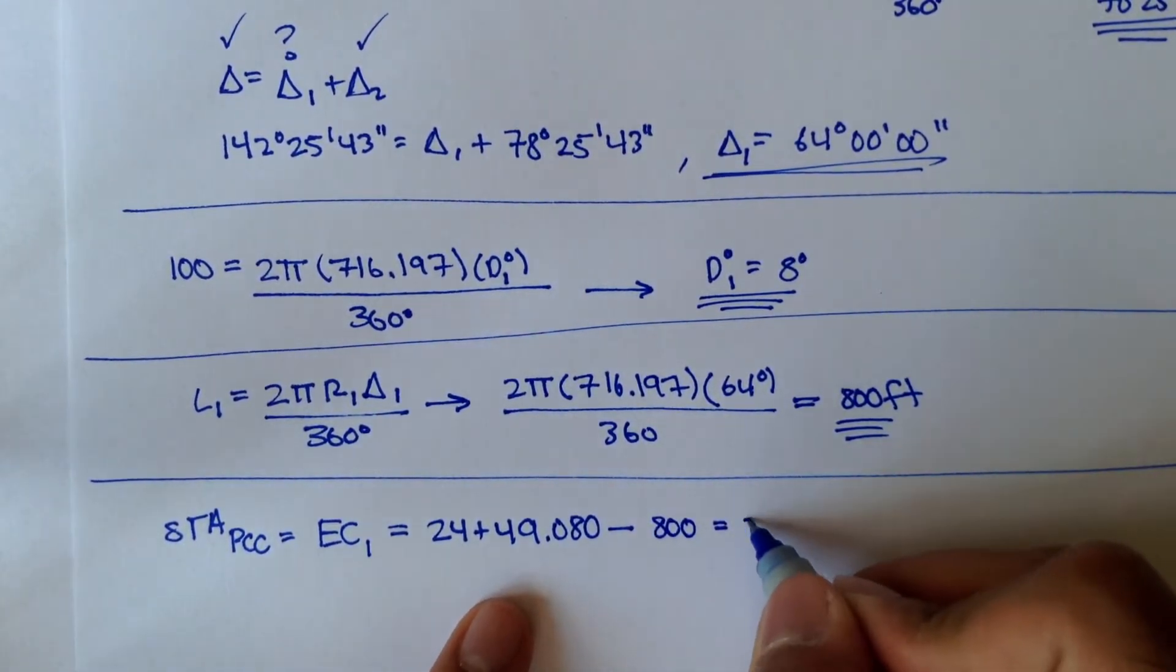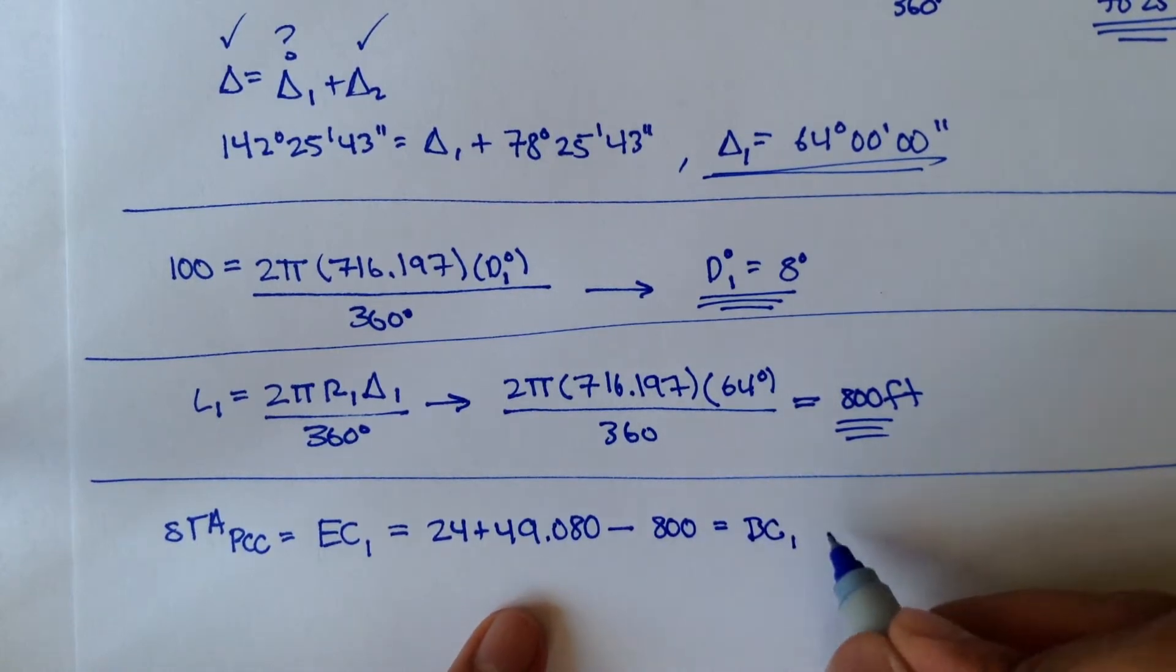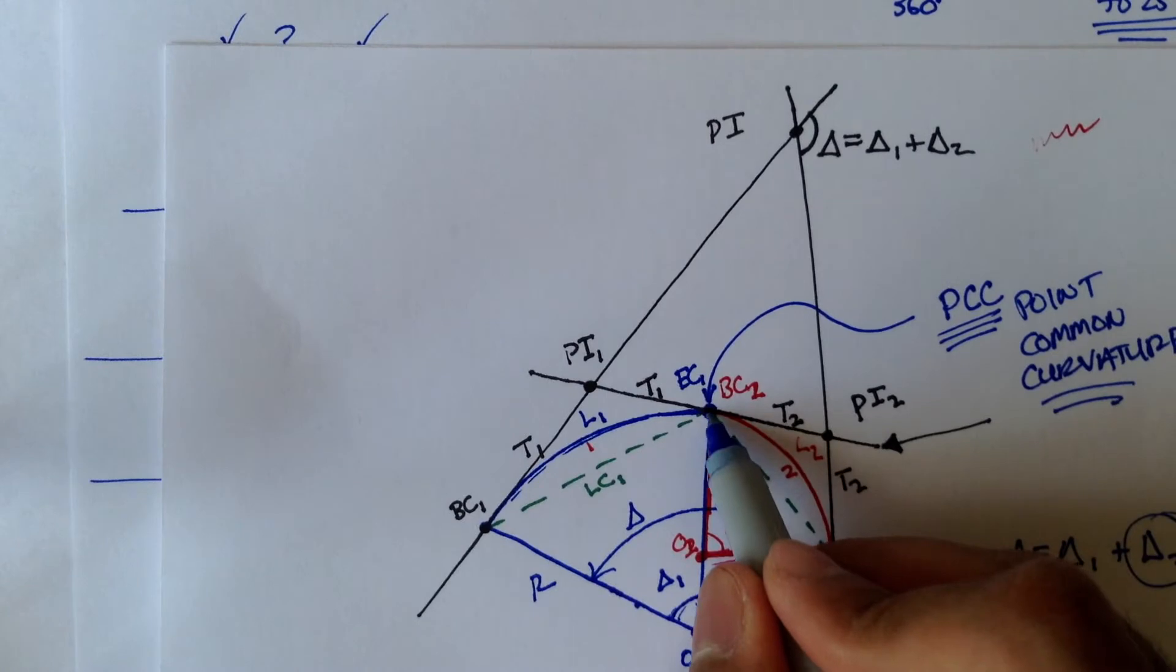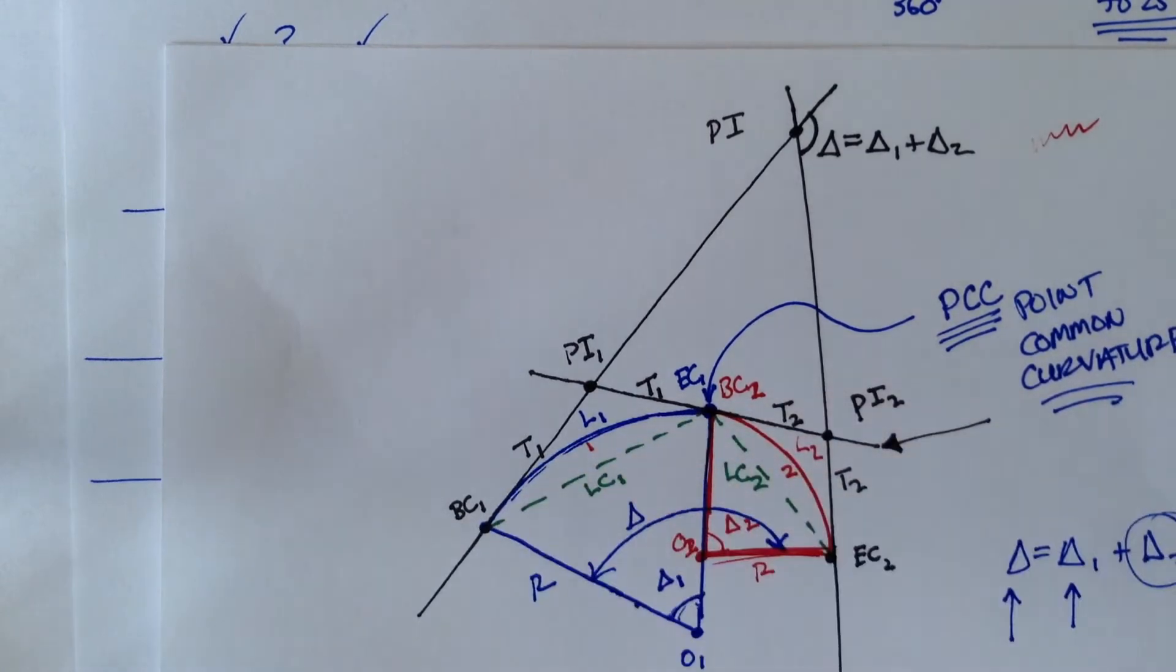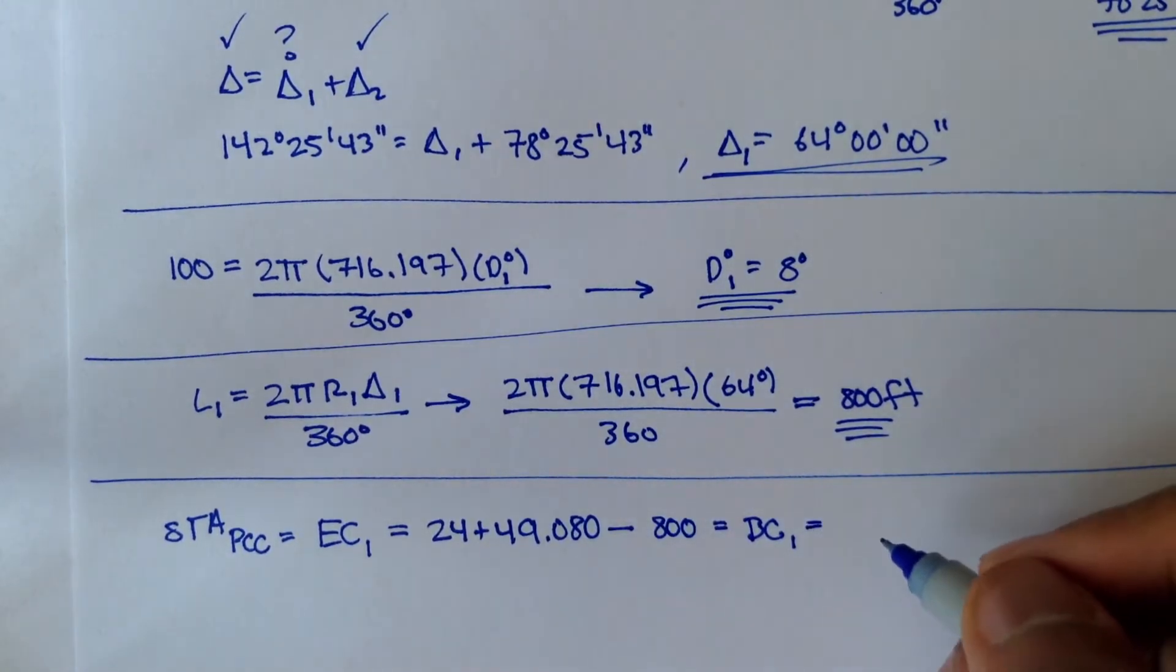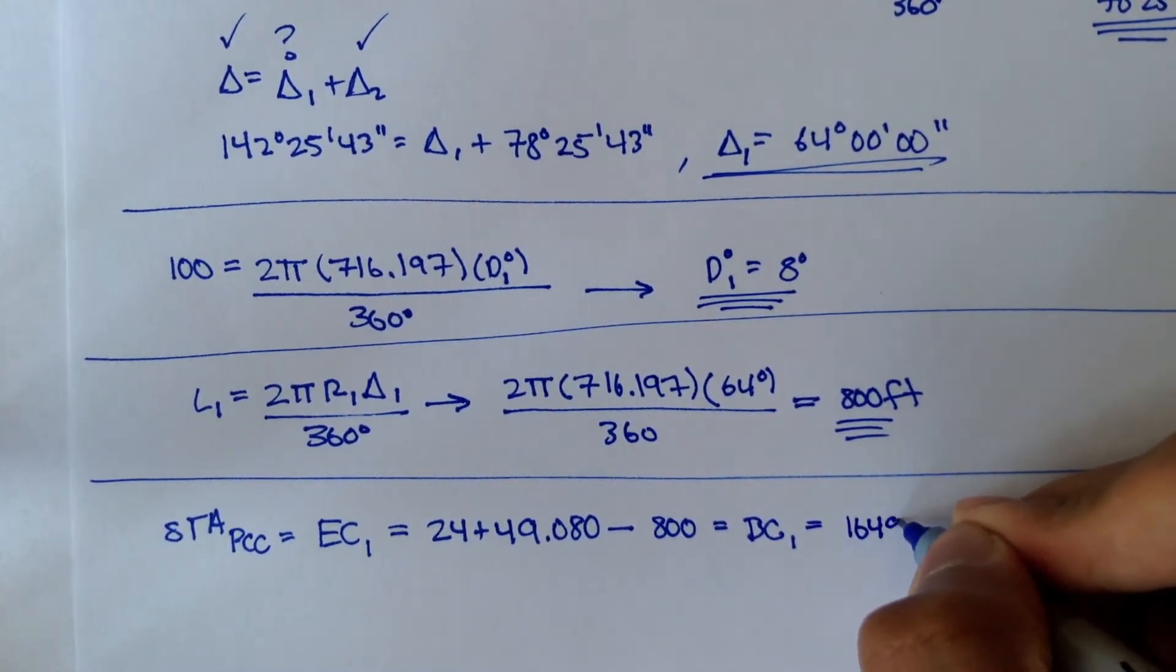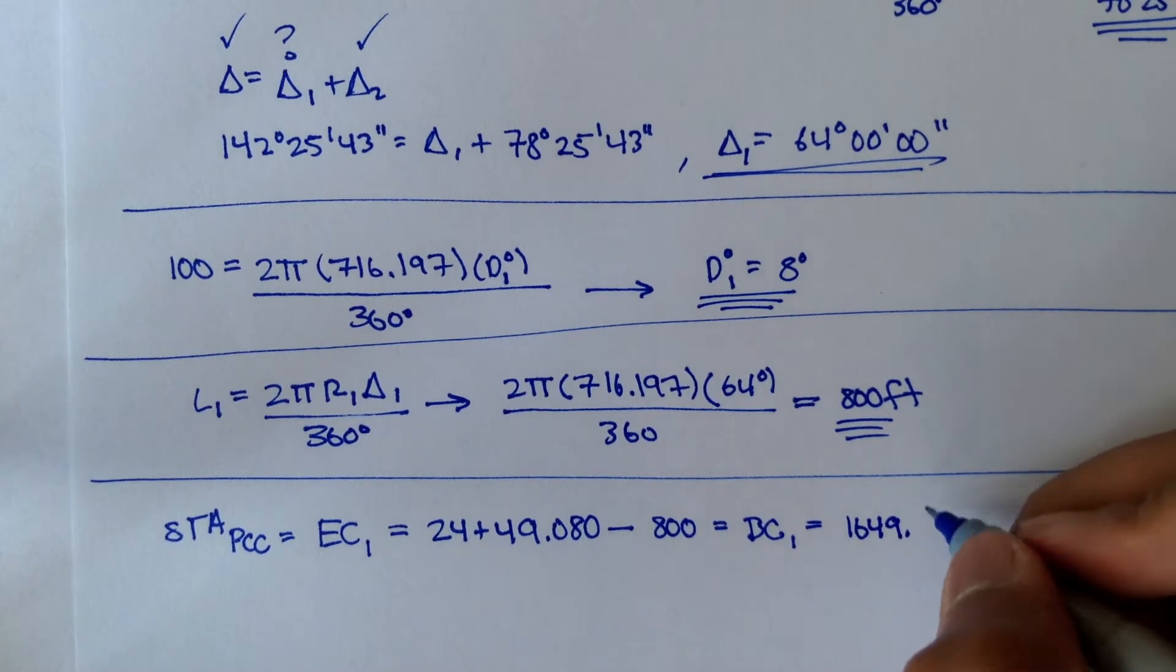And this is BC1. So we just subtracted L from EC1 to get BC1. And so BC1 should be 1649.080.